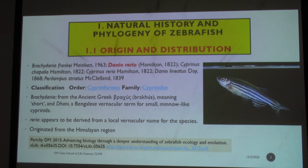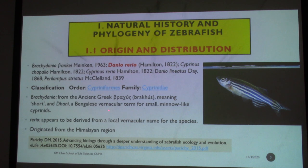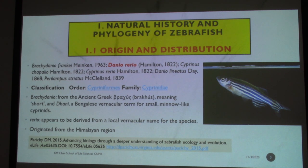The name came from Brachydanio, from ancient Greek. 'Brachy' means short, and 'danio' — or 'dhani' — is a Bengalese name for a small fish, or something that looks like a minnow, a kind of small fish common in North America or Europe. 'Rerio' appears to be derived from a local vernacular name for the species, meaning short fish or small fish. It's actually originally from the Himalayan region.